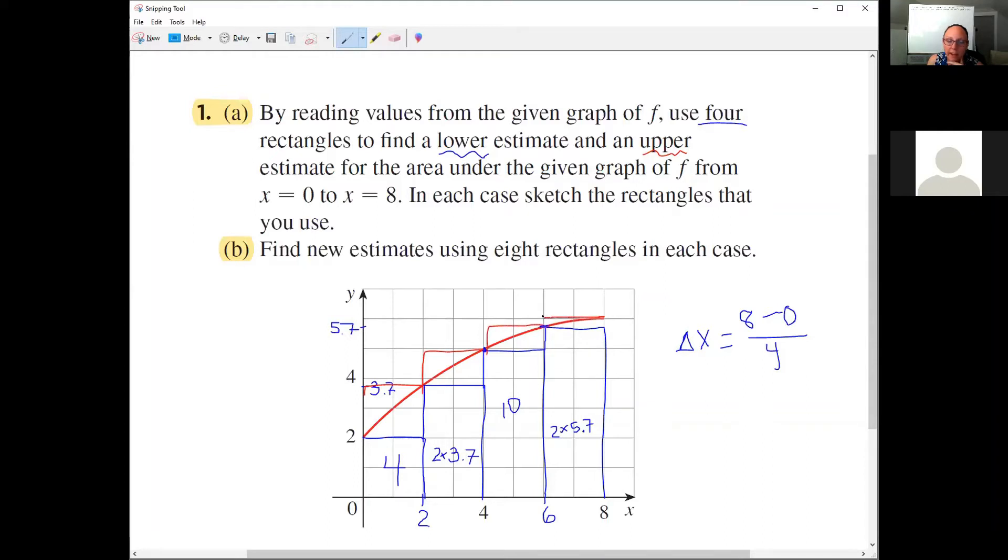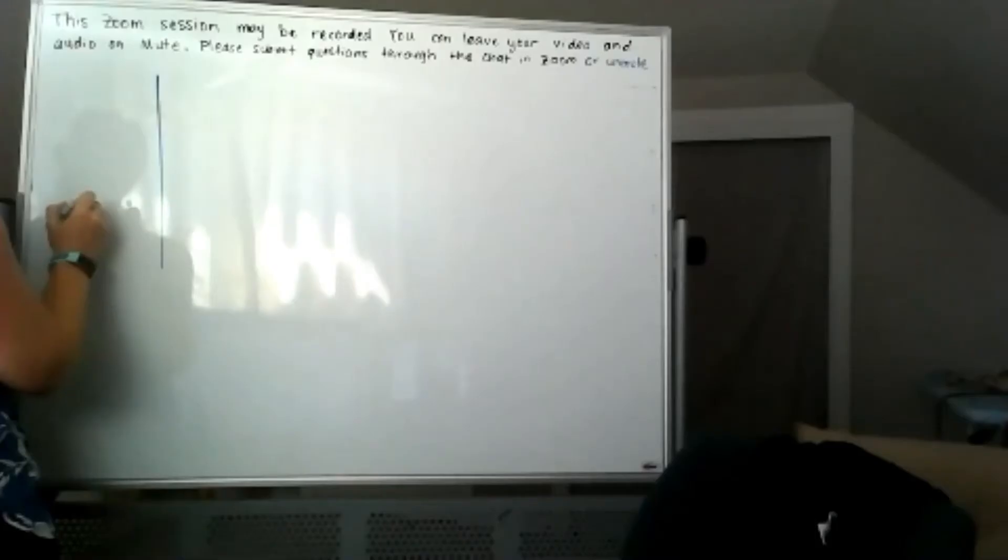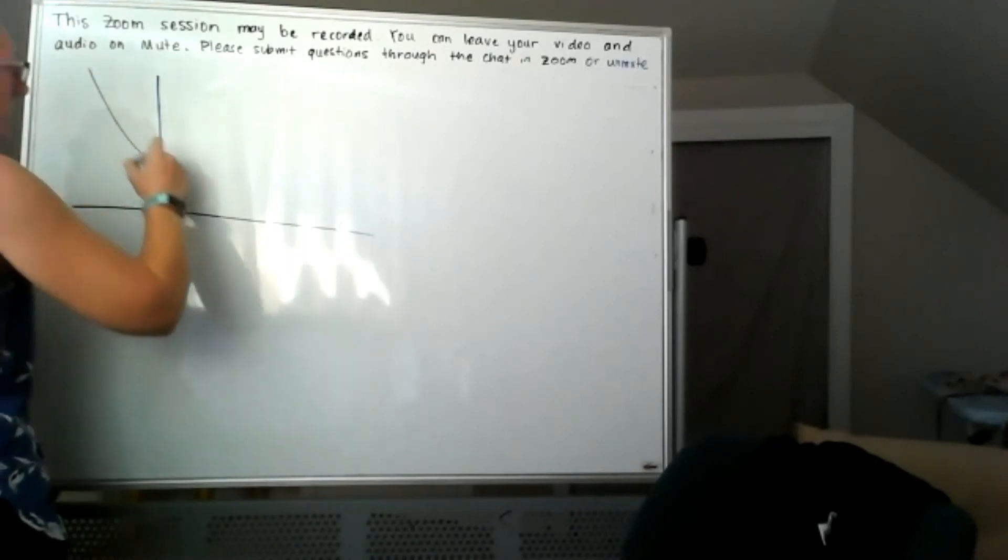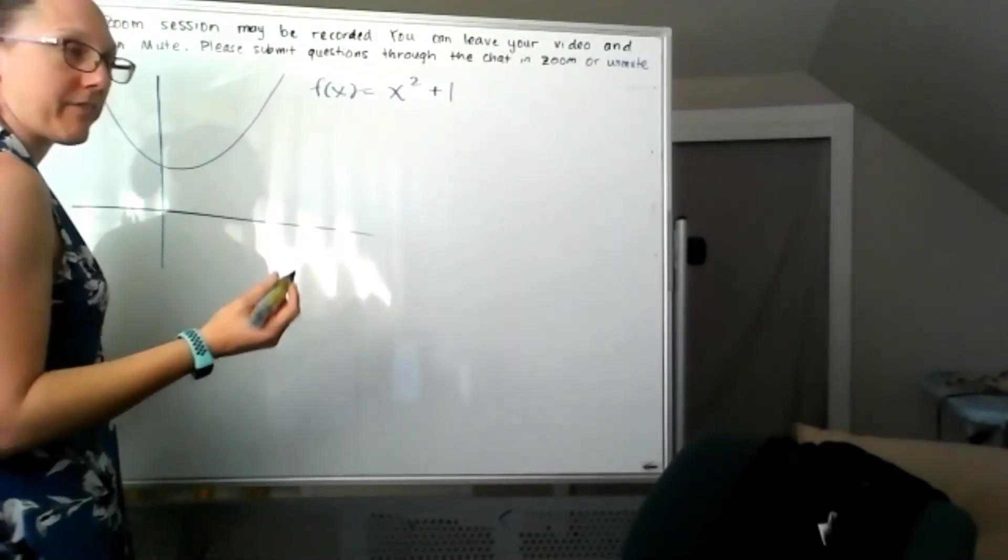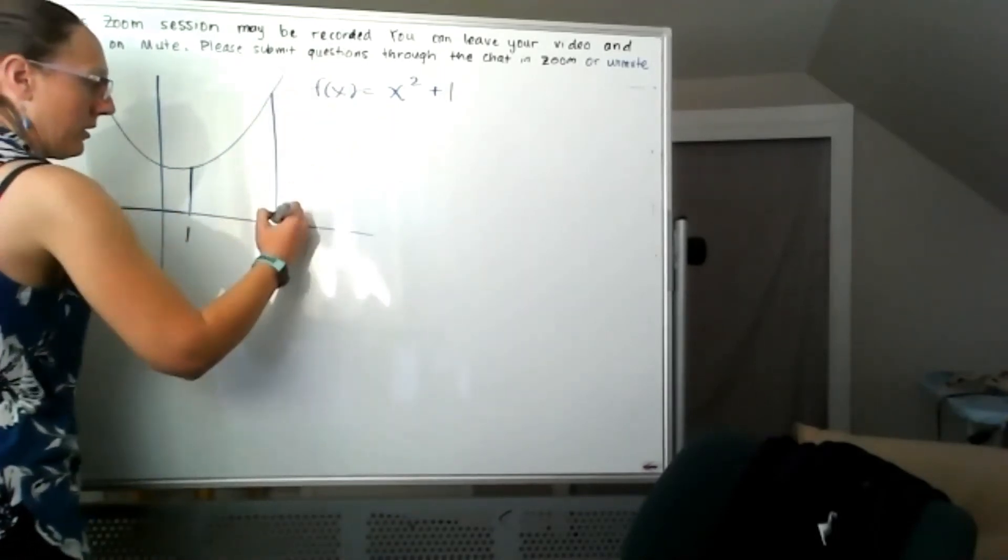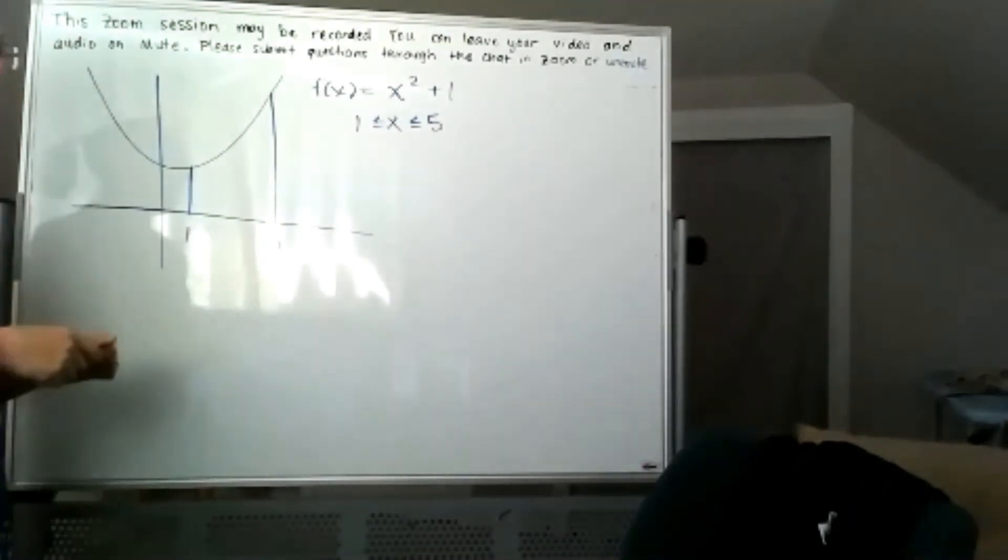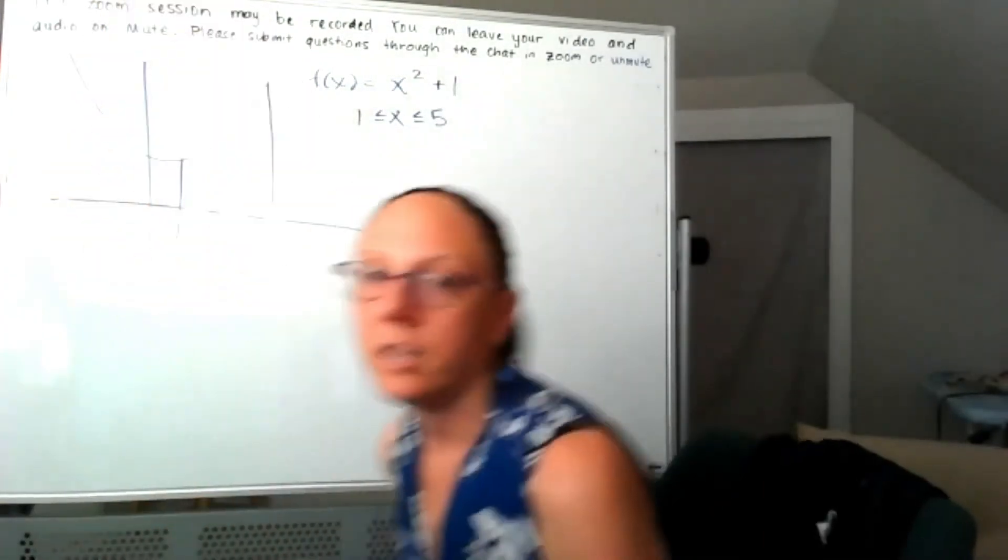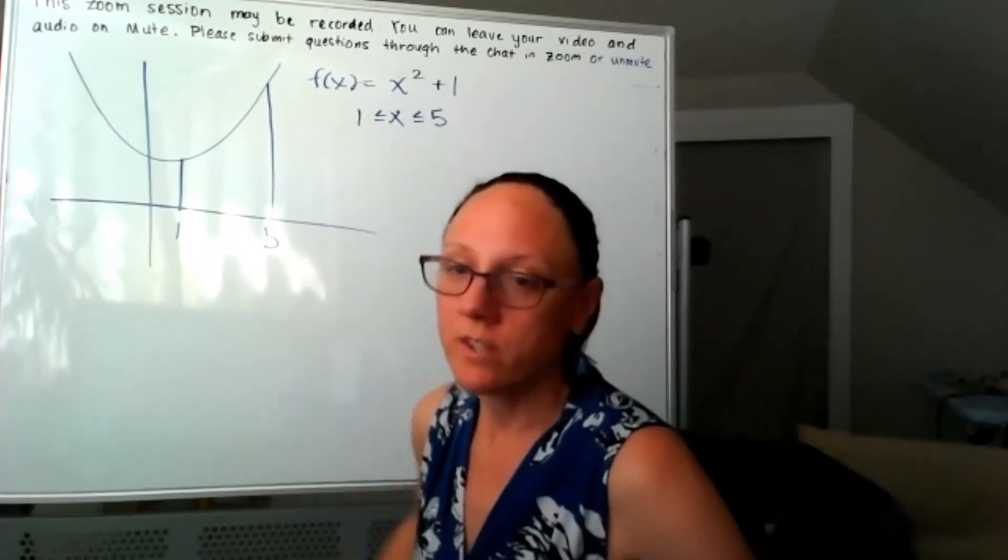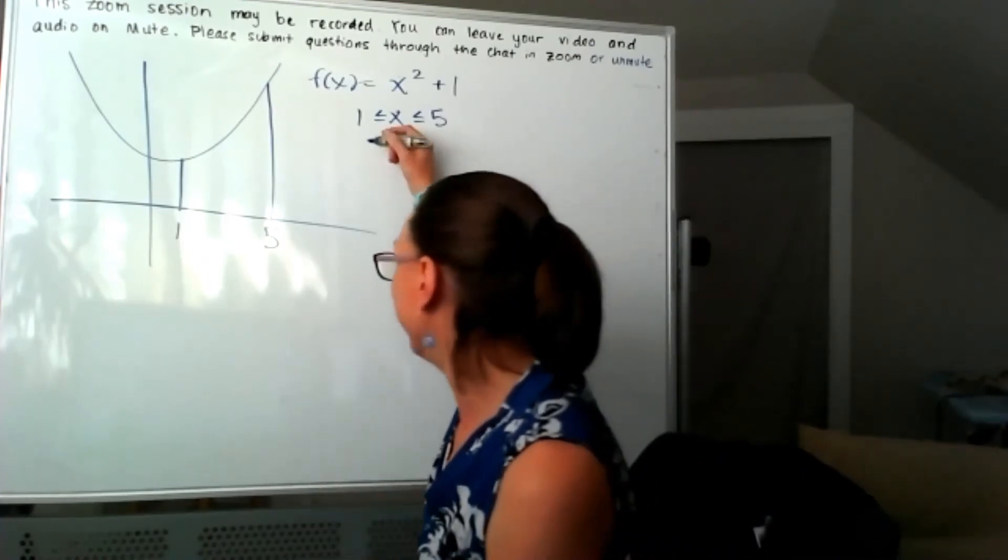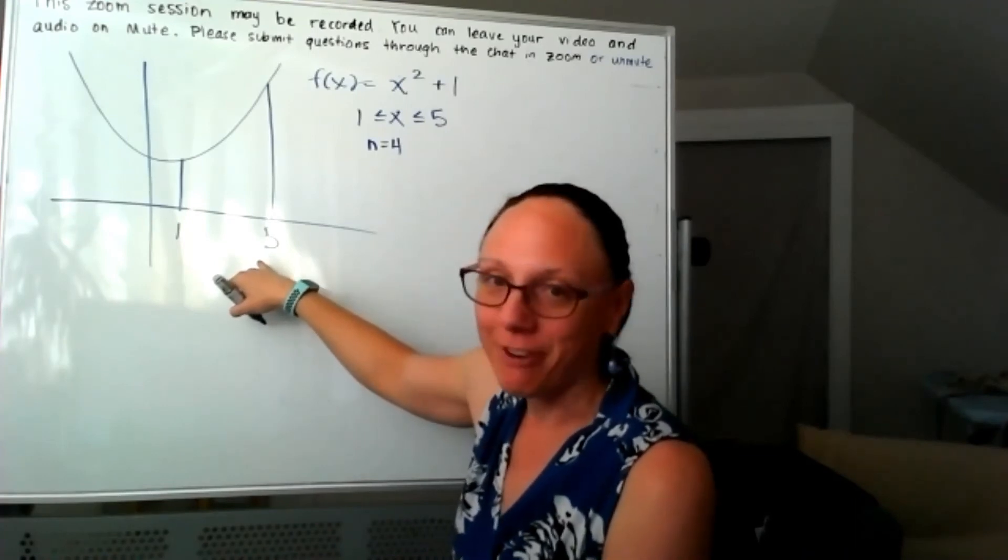So my function is going to be f(x) = x² + 1, and I want to find the area, estimate the area, from 1 to 5. I'm going to do the nice problem first. A nice problem here would be something neatly divisible, so I'm going to choose 4, unless you want to work with ugly numbers. So we're going to take this section from 1 to 5.